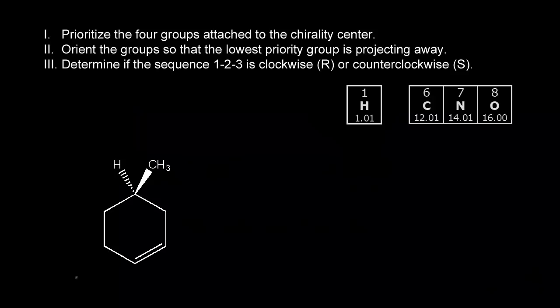Let's get some more practice with the RS system. We'll start with this compound right here. We already know from earlier videos that this carbon is a chiral center, so let me go ahead and redraw everything because it's going to help us assign a configuration.